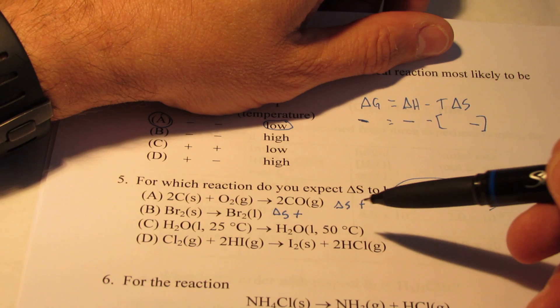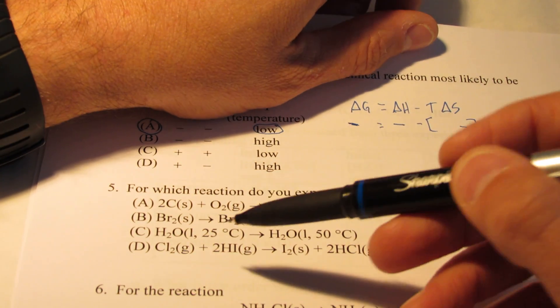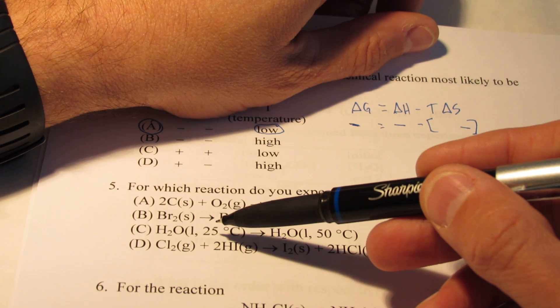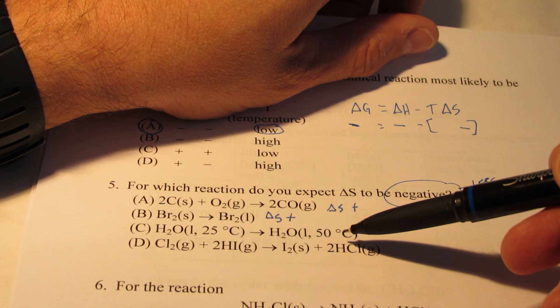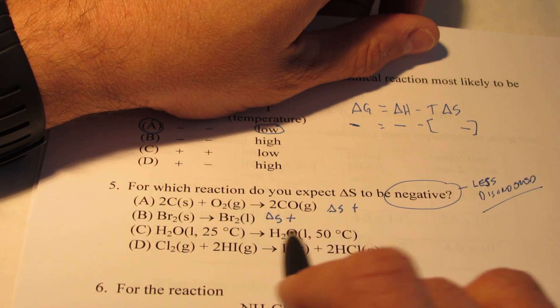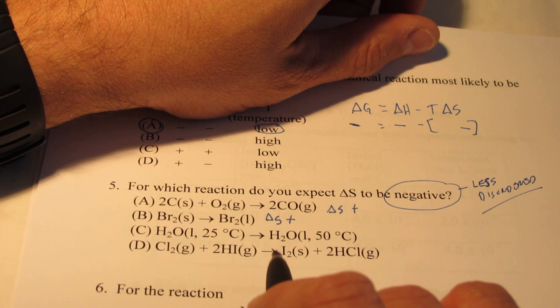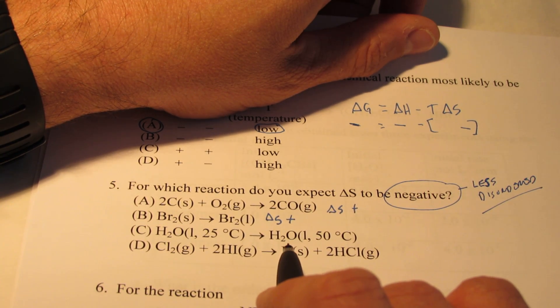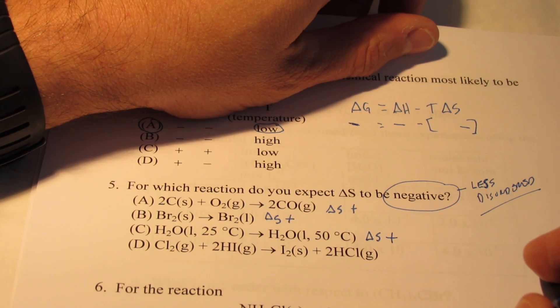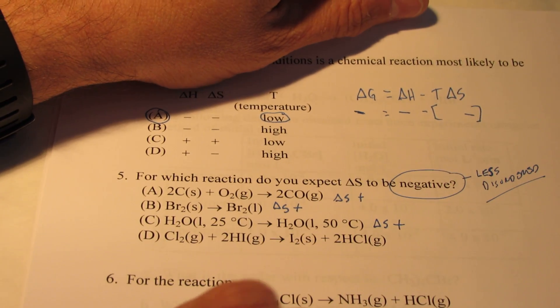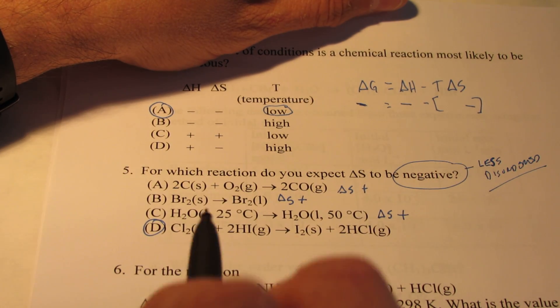And then letter C, this is the one I get the most question on, talks about water as a liquid at 25 Celsius turning into water as a liquid at 50 Celsius. Now the temperature is increasing, which increases the kinetic energy of those particles. They're moving faster. And as a result, disorder at a higher temperature increases. So that leaves us with letter D. Obviously that has to be our answer, but let's just check to make sure.